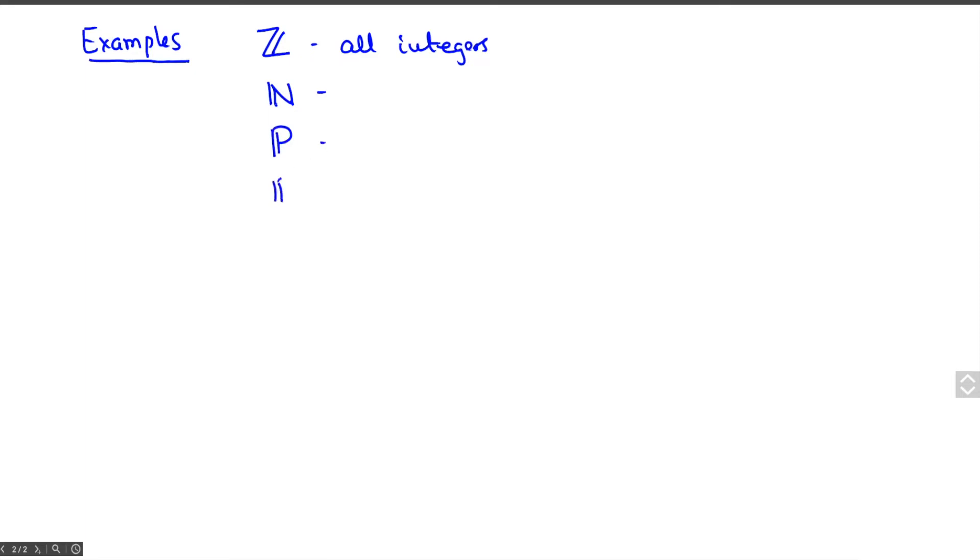You could take R, all real numbers, or Q, rational numbers. We do not have a good partial order on the set of complex numbers, though you could try to find some.